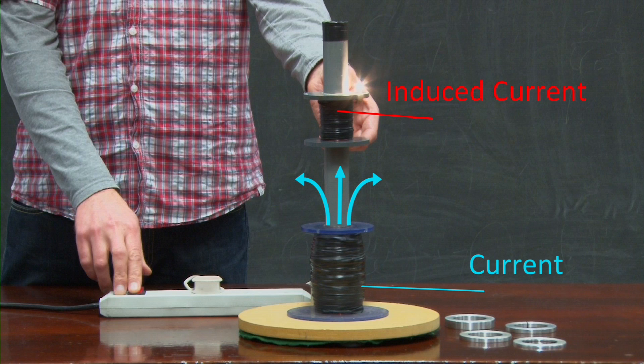an EMF will be induced, causing a current to flow. And so the bulb lights up.